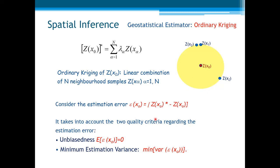Considering the estimation error — the difference between the estimator and the real value — what we want is to get an estimator, ordinary Kriging, that takes into account two quality criteria regarding the estimation error. The first one, called unbiasedness, tells us that the expectation of the error should be equal to zero. The second one is regarding the variance of this error: we want the minimum estimation variance.